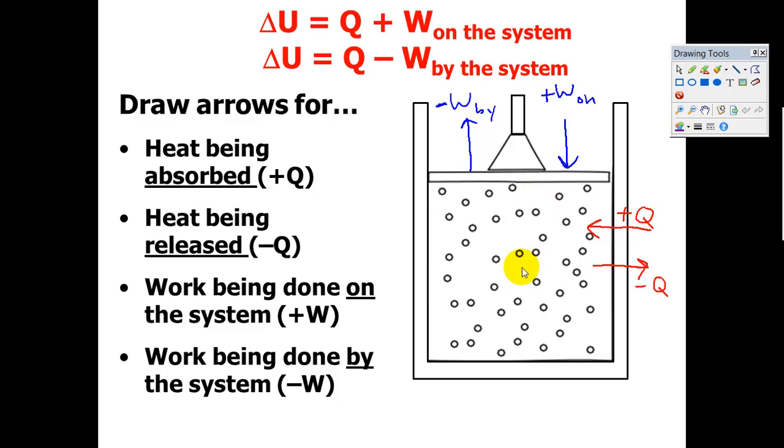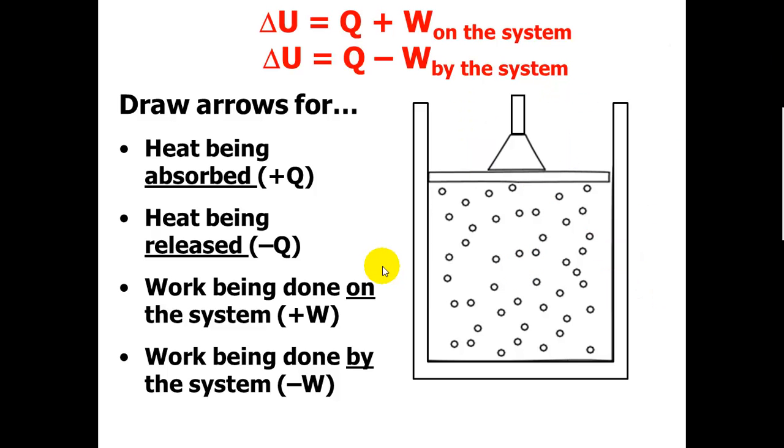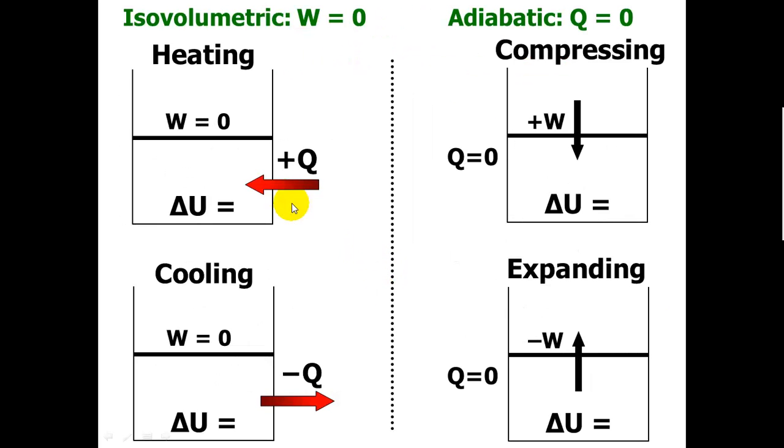Let's go to the next slide here. In the next slide, we have four different situations, and you should make sketches of these also in your notes. On the left side, we have what's called isovolumetric, which means that there is no change in volume. Isovolumetric means same volume. So all it means is that the piston is not moving up or down. So the work being done is equal to zero.